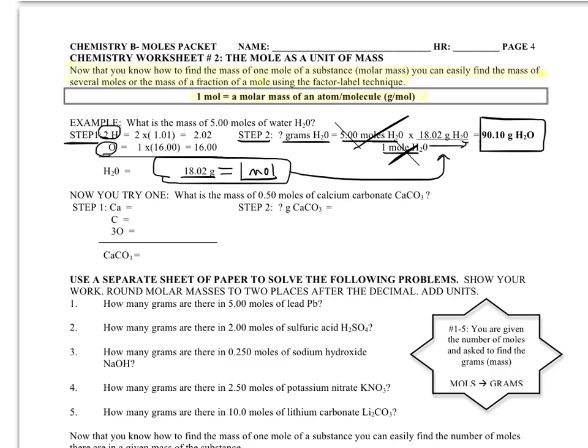So now you are going to try one. The next example asks us, what is the mass of 0.5 moles of calcium carbonate, which is CaCO3. So when they ask for mass in these problems, keep in mind that really means grams because grams is the unit that we use to measure mass. So step one, calculate the molar mass.